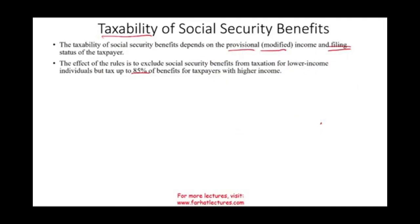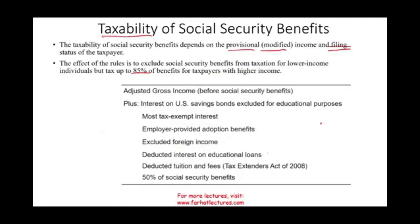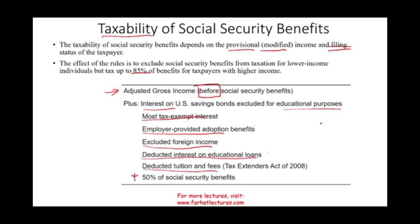How do we compute this provisional modified income? We're going to take your adjusted gross income before social security — so we take out social security and compute your adjusted gross income — then add any interest on U.S. savings bonds that was excluded for educational purposes, add most tax-exempt interests, add employer-provided adoption benefit, add excluded foreign income, add deducted interest on educational loans, add deductions for tuitions and fees, and then add 50% of your social security.